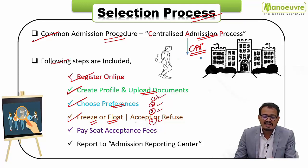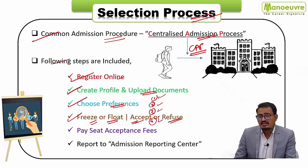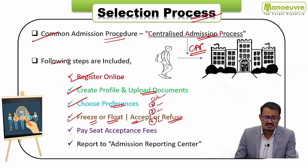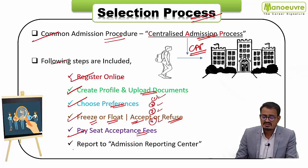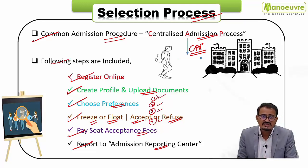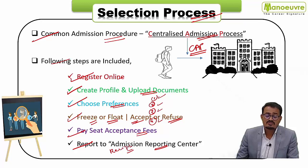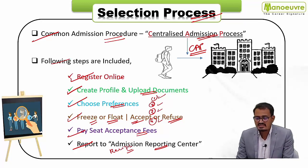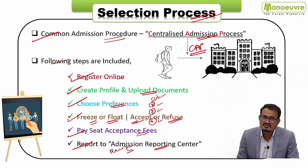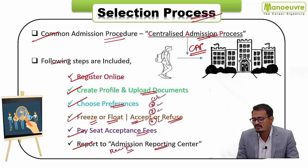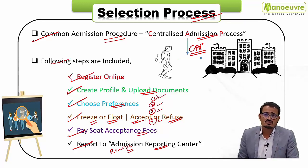In 2020, the CET Cell changed the options from freeze and float to 'accept' or 'refuse'. If you want to accept the allotted college, you can accept — equivalent to freeze. If you want to refuse, you can participate in subsequent rounds. Thereafter, pay the seat acceptance fees online, then report to the Admission Reporting Center — ARC — submit all documents there, and collect the receipt. This completes the Centralized Admission Process. For more details about the CAP round, you can watch the related videos on YouTube or ask in the comment section.